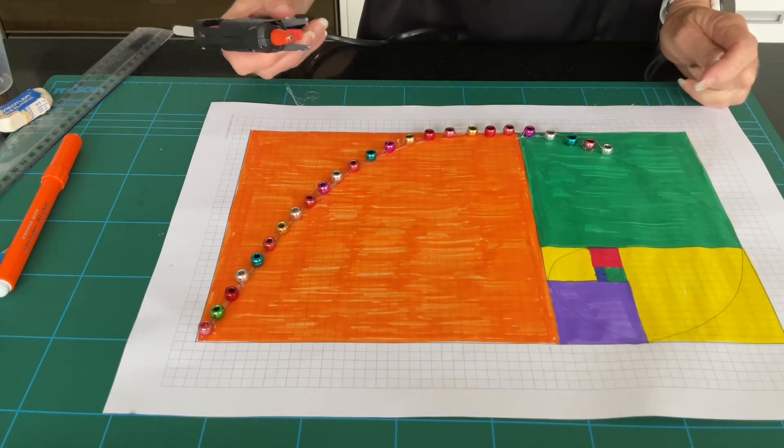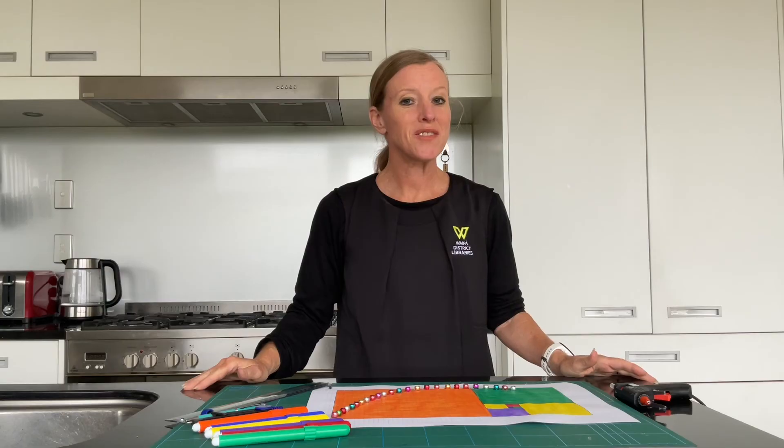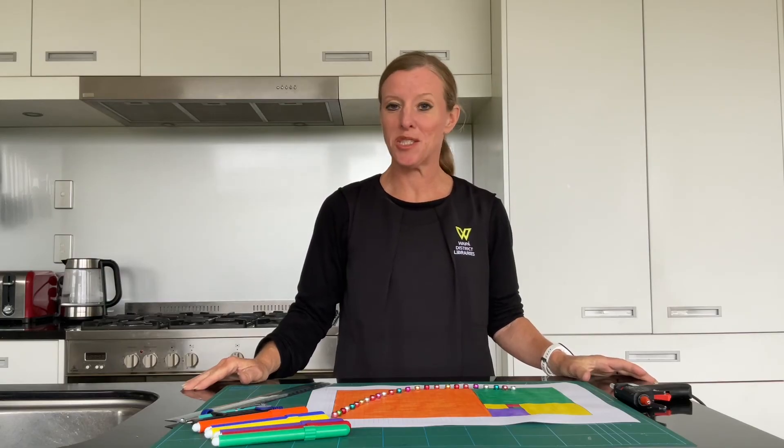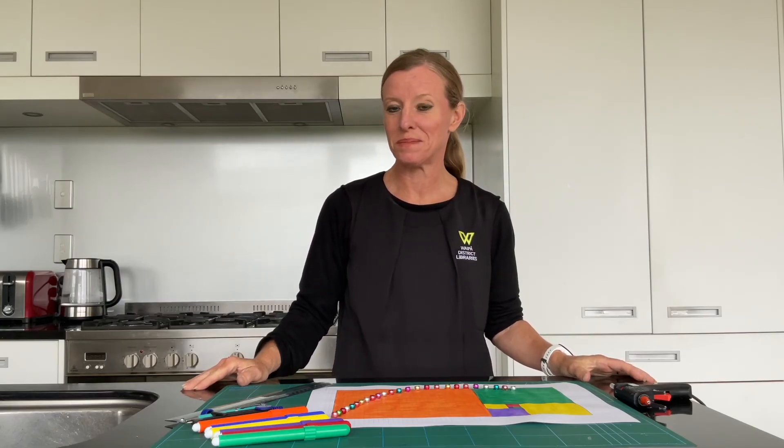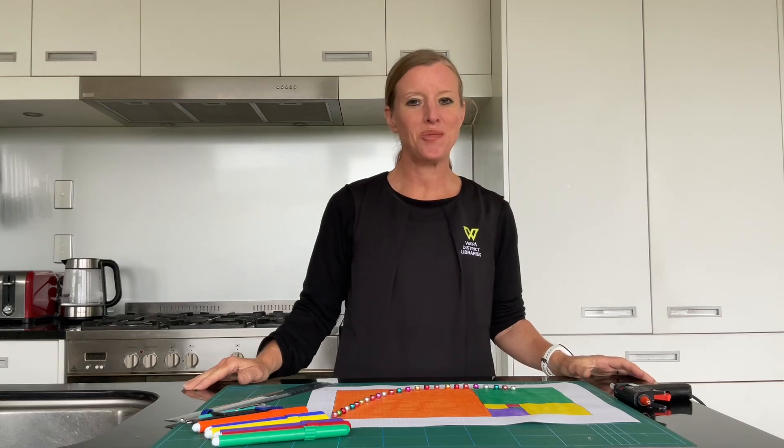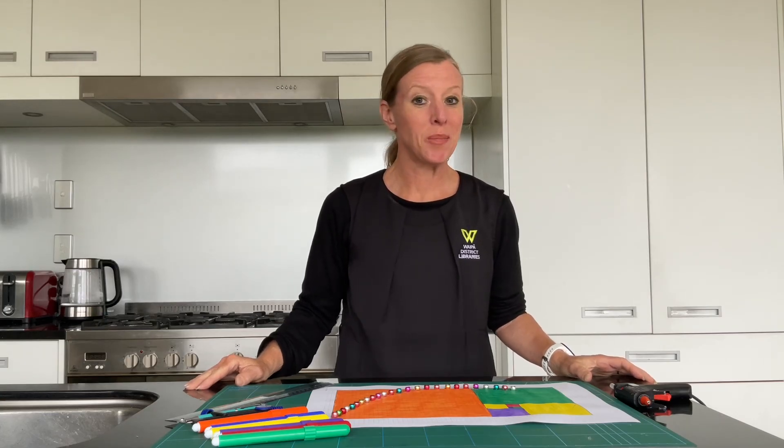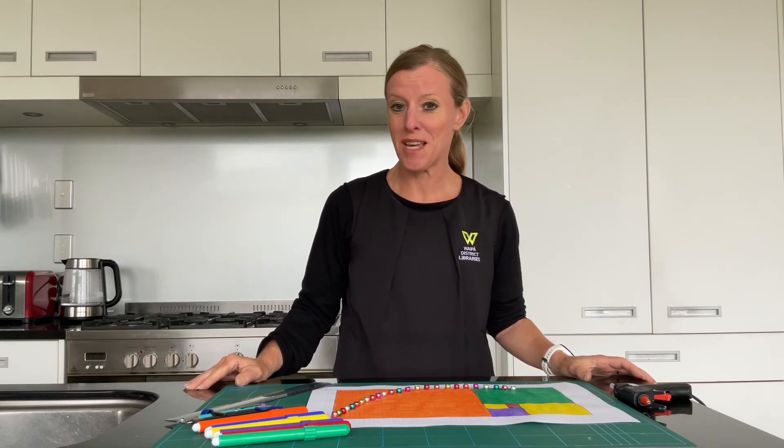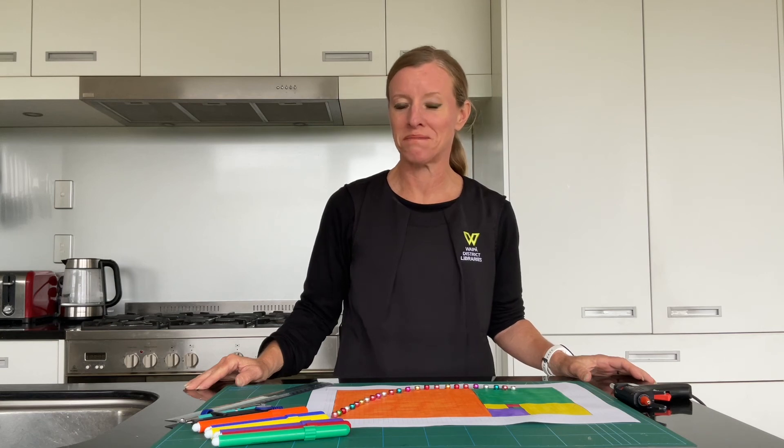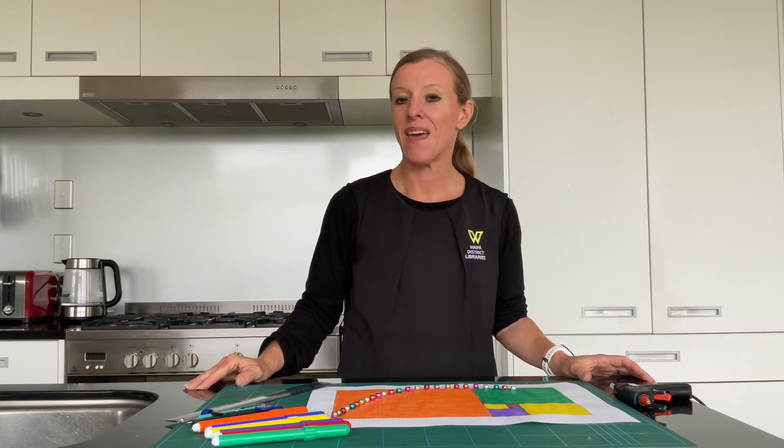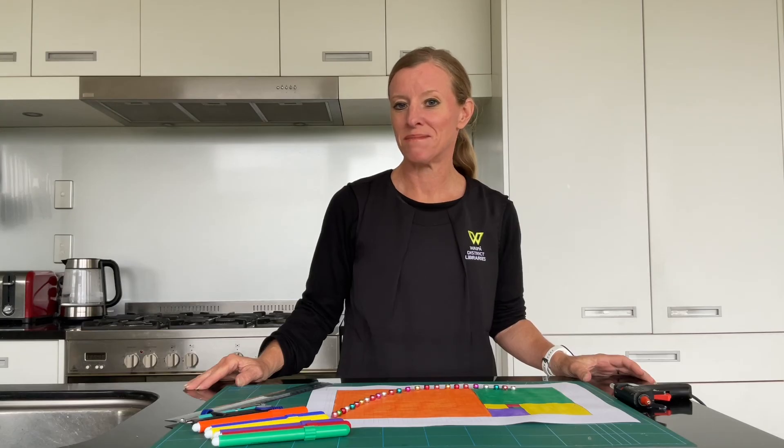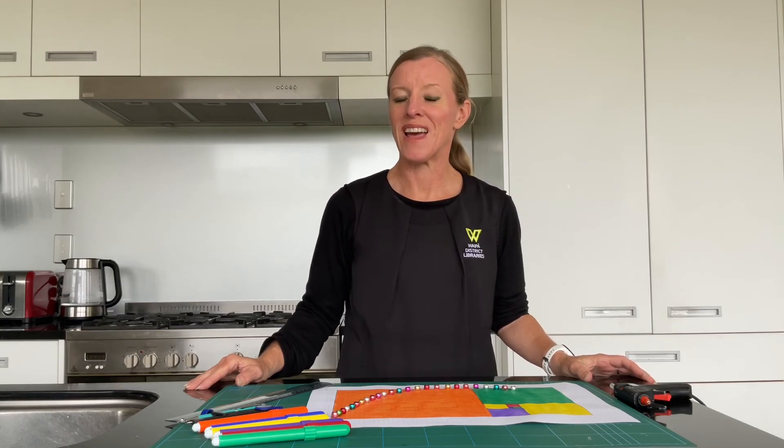And keep going until you've finished your spiral. Can you think of some examples where the Fibonacci spiral is in play? Think of the natural world. What about the silver fern? Could that be a Fibonacci spiral? It's also seen in the art world. Think about the Mona Lisa. That is apparently based on a Fibonacci spiral as well.